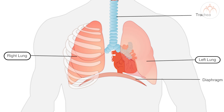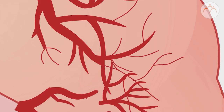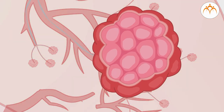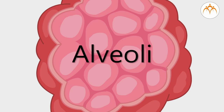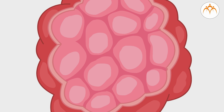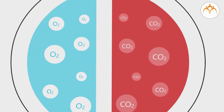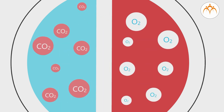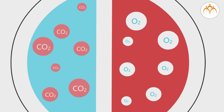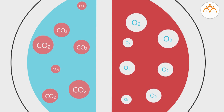Lungs are spongy elastic bag-like organs. Each lung has a protective double layer called pleura. Inside each lung there are numerous small spherical air sacs called alveoli. Alveoli are surrounded by a network of blood capillaries. Oxygen from alveoli and carbon dioxide from capillaries are exchanged in the lungs. This is how blood gets purified or oxygenated in the lungs.